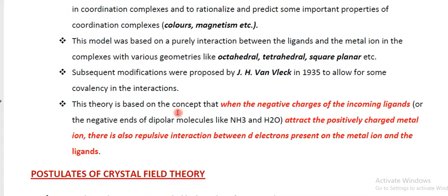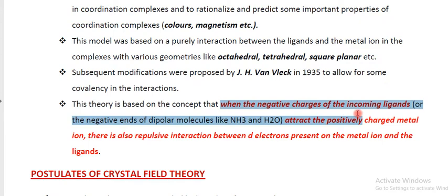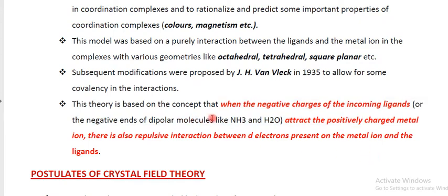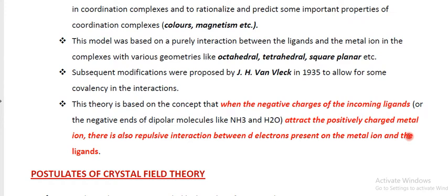This theory is based on the concept that the negative charges of the incoming ligands will attract the positively charged metal ion, and there is also a repulsive interaction between the d electrons present in the metal ion and the ligands. This repulsive interaction is between the electrons present in the metal ion and the negative charge of the ligands. This is the basic concept, which we will discuss through certain postulates.